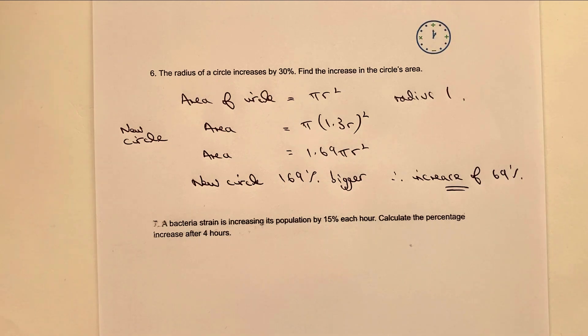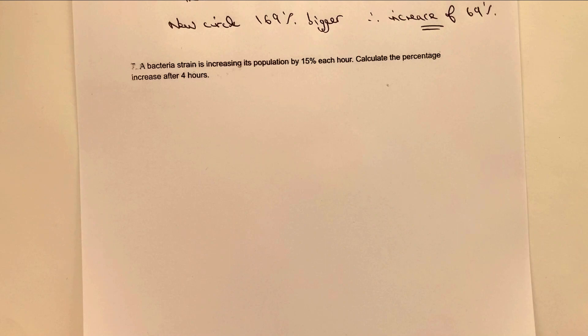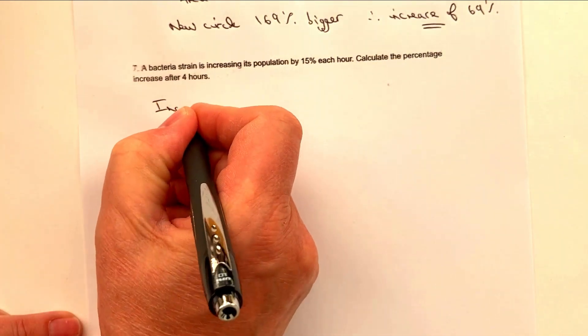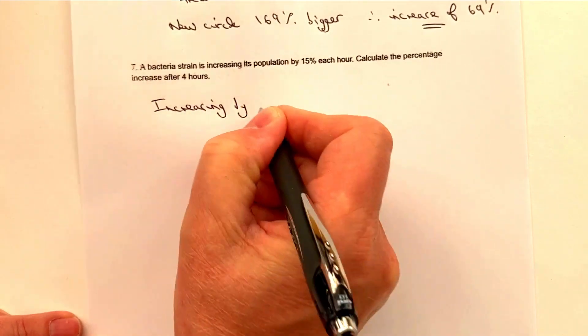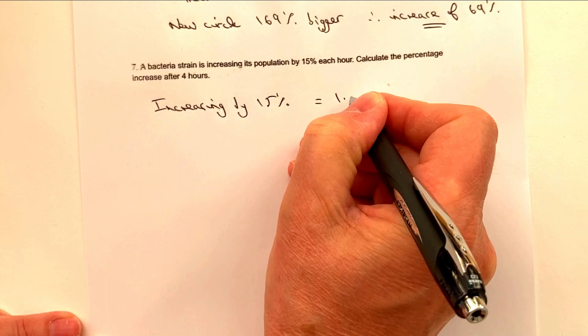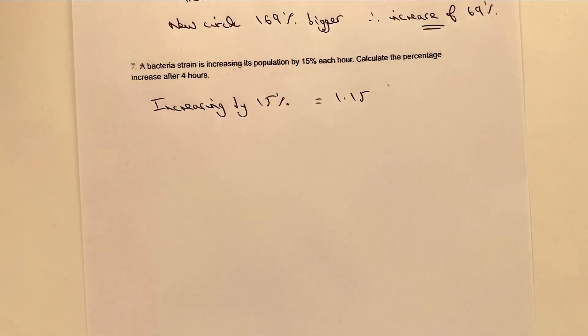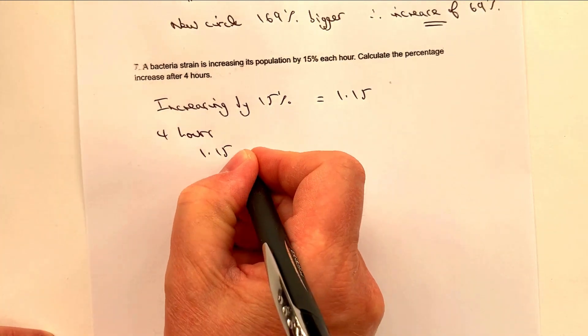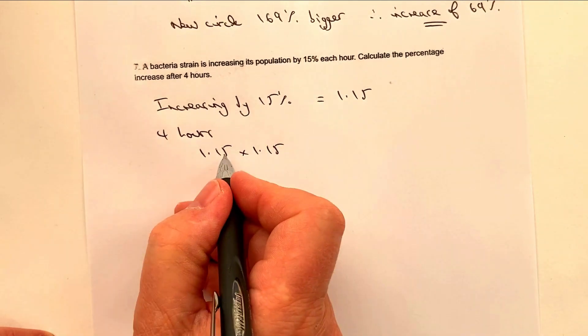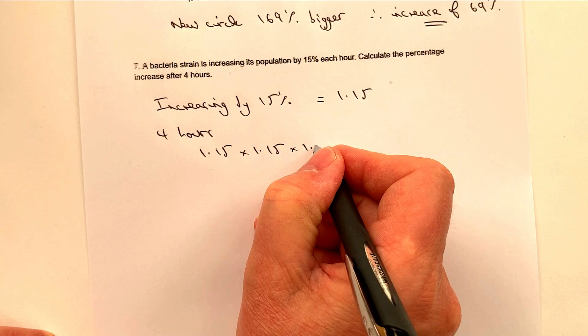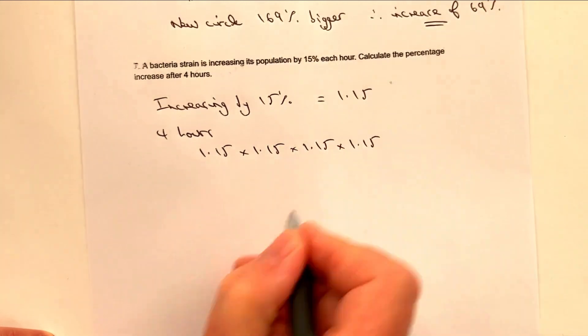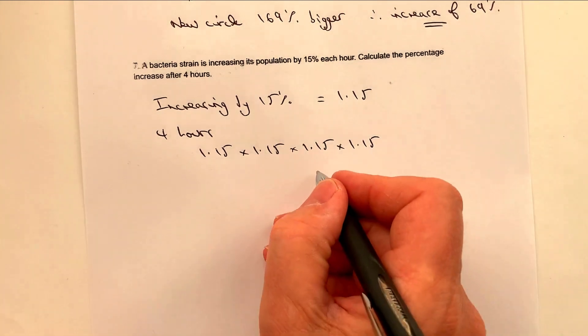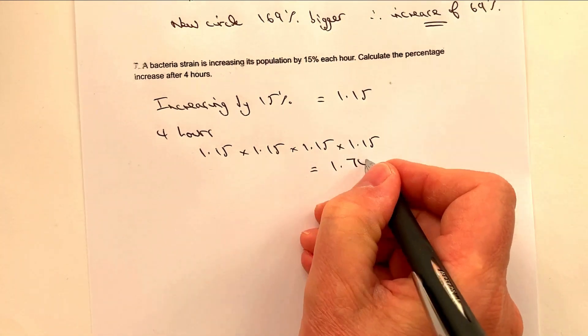It's very much a similar one with the bacteria strain. So bacteria strains increasing its population by 15 percent each hour. Calculate the percentage increase after four hours. So if it's increasing by 15 percent, then that's going to be equal to 1.15 as a decimal. So after four hours, it's going to be 1.15 times 1.15 because 15 percent bigger of this increase. It's multiplied by, again, 1.15 times 1.15. So it's going to happen four times. So actually, what we've got at the end of that is going to be 1.749.